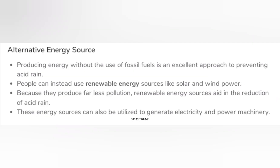Alternative energy source: producing energy without the use of fossil fuels is an excellent approach to preventing acid rain. People can instead use renewable energy sources like solar and wind power. Because they produce far less pollution, renewable energy sources aid in the reduction of acid rain. These energy sources can also be utilized to generate electricity and power machinery.